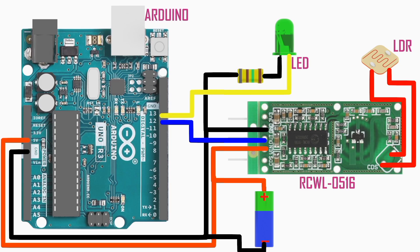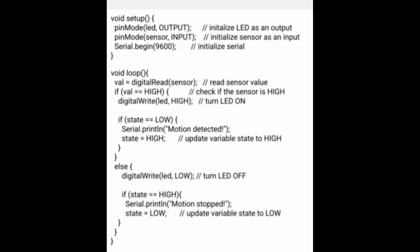Understanding the coding used with Arduino: the Arduino module has power pins, analog input pins, and digital pins. In void setup, initialize the LED as an output, the sensor as an input, and initialize serial. In void loop, Arduino reads the sensor value and checks if it is high — if high, it turns on the LED, meaning motion is detected; if low, it turns off the LED, meaning motion has stopped. This is the basic structure of how to code with Arduino for this sensor.